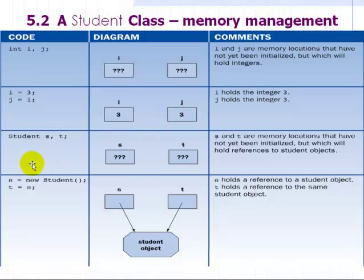Objects, however, are very different. This line, student s comma t, is declaring two students, and it is supposed to be analogous to this line up here, declaring two integers.